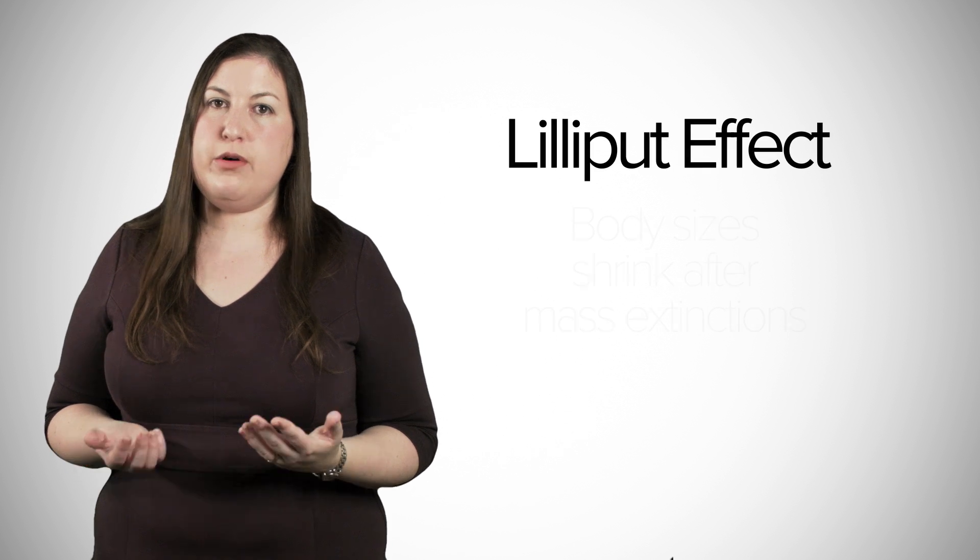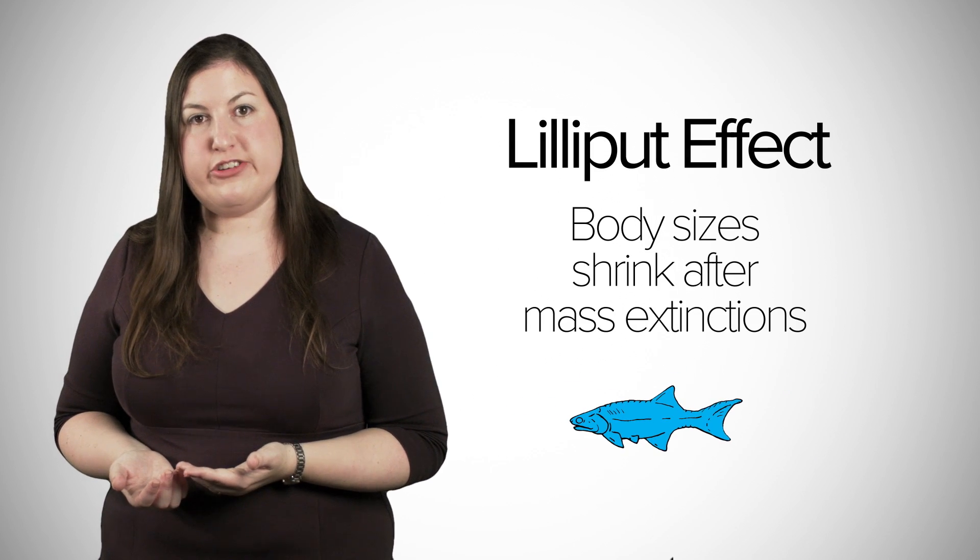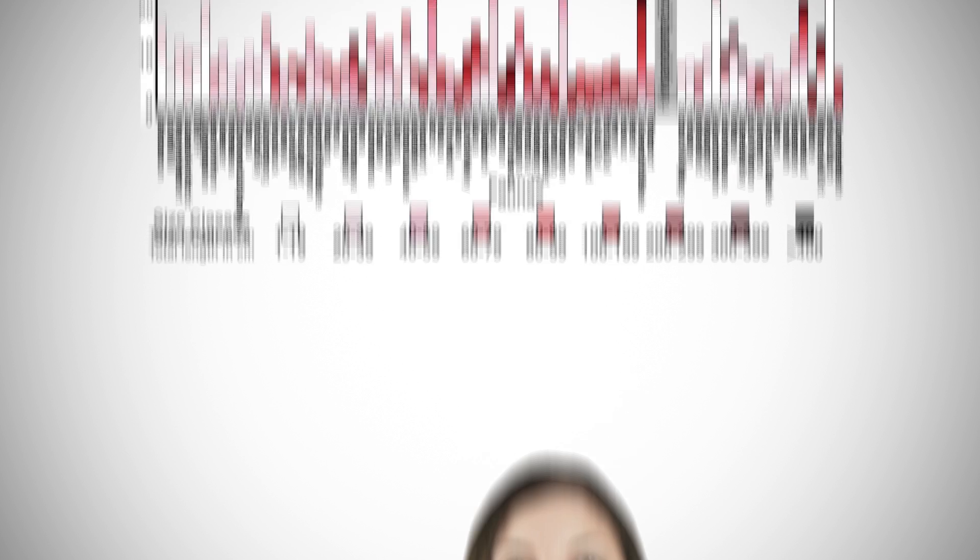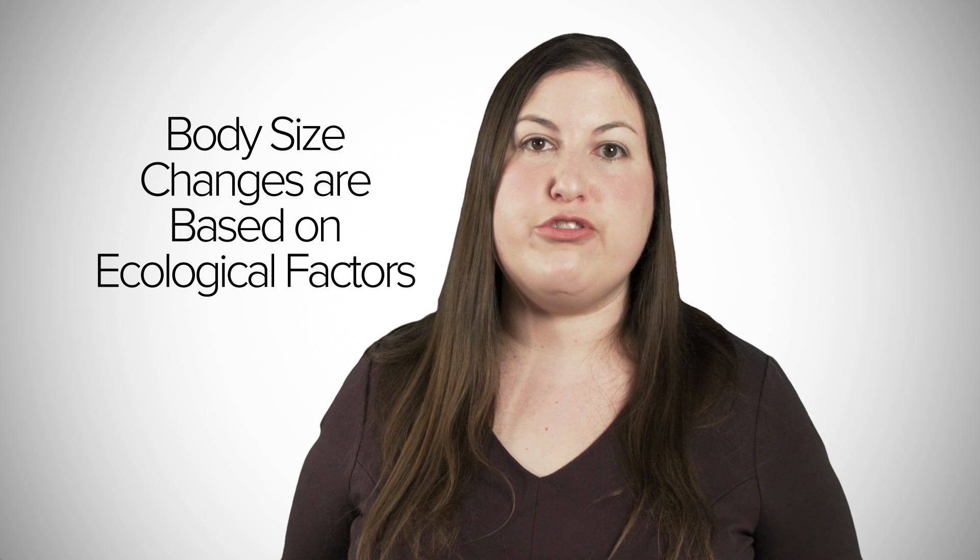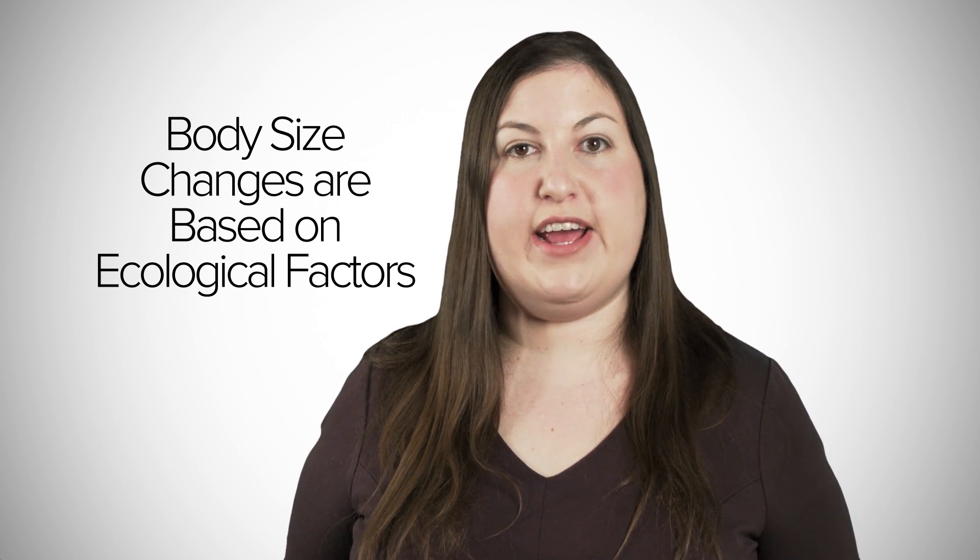The Lilliput effect holds that body sizes shrink after mass extinctions. To sort out the body size trends around the Hangenberg event, our team looked at data from over 1,200 fossils from 419 to 323 million years ago. We mapped the body size trends against climate models during the time period to see if the existing theories relating body size to atmospheric oxygen or temperature could explain the size changes. The answer was a resounding no. And that tells us that these trends must be based entirely on ecological factors.